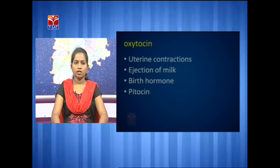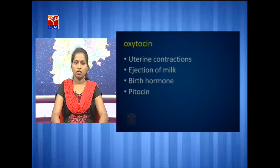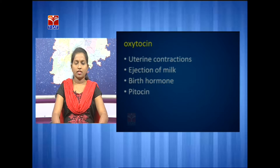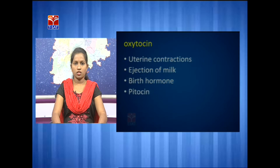The two hormones regulated by the posterior lobe are oxytocin and vasopressin. Oxytocin stimulates uterine contractions — it stimulates the smooth muscles of the uterus to contract during childbirth and labor. It also promotes lactation by ejecting milk after childbirth. Because it is involved in the total process of birth, it is also called the birth hormone.